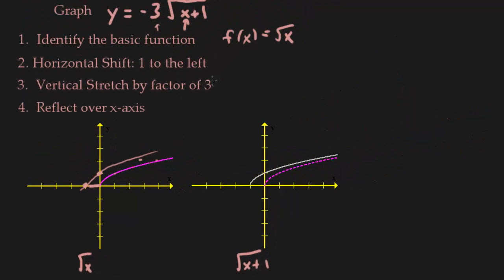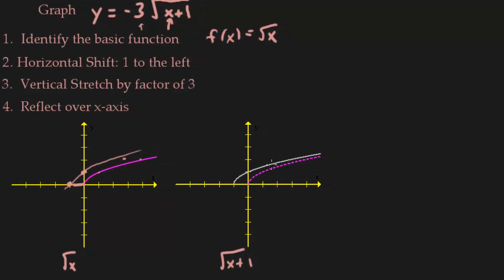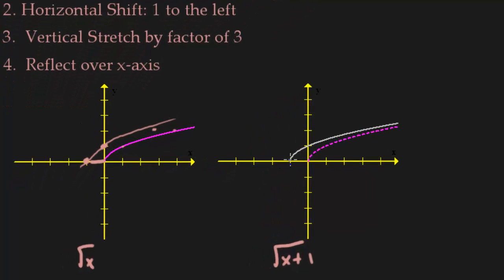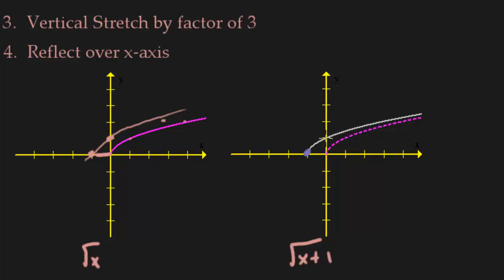Now we're going to do a vertical stretch by a factor of 3. That means you're going to take every single y value that's on this new graph and multiply it by 3. So before I graph it, just to get an idea, if I multiply this point by 3, I still get that point. If I multiply this by 3, I'm now up here, so 1, 2, 3.